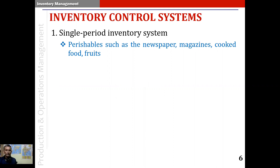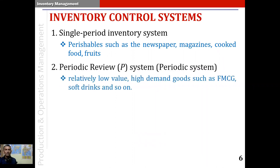The second type of system is called the periodic review system, or the P system, also known as the periodic system. This system is used to manage the inventory of relatively low value, high demand goods, such as FMCG, soft drinks, and so on.